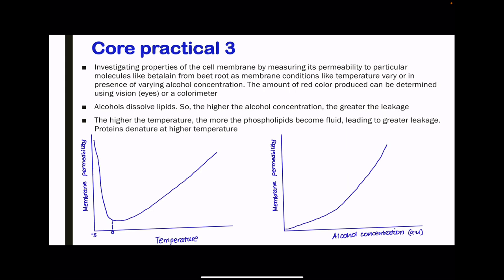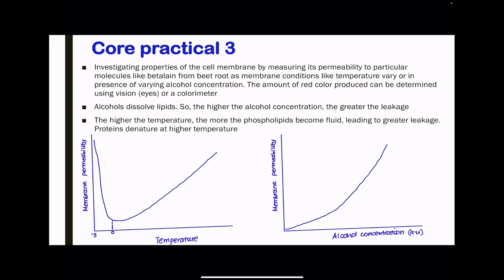In reference to Core Practical 3, this is about investigating properties of the cell membrane by measuring its permeability to particular molecules like betalain, which comes from beetroots. As cell membrane conditions like temperature vary, or in the presence of varying alcohol concentration, the amount of red betalain color produced can be determined using your eyes or a colorimeter. Alcohol dissolves lipids, so an increase in alcohol concentration leads to greater leakage of betalain and therefore more red color. The higher the alcohol concentration, the higher the membrane permeability. For temperature, the higher the temperature, the more the phospholipids become fluid, leading to greater leakage. As temperature increases, proteins are also denatured, which further increases leakage.